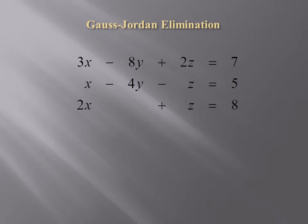We're going to illustrate how to solve a system of linear equations using Gauss-Jordan elimination. In this example, we have three equations with three unknowns: x, y, and z.